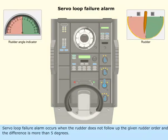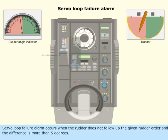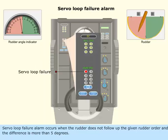Servo Loop Failure Alarm occurs when the rudder does not follow up the given rudder order and the difference is more than 5 degrees.